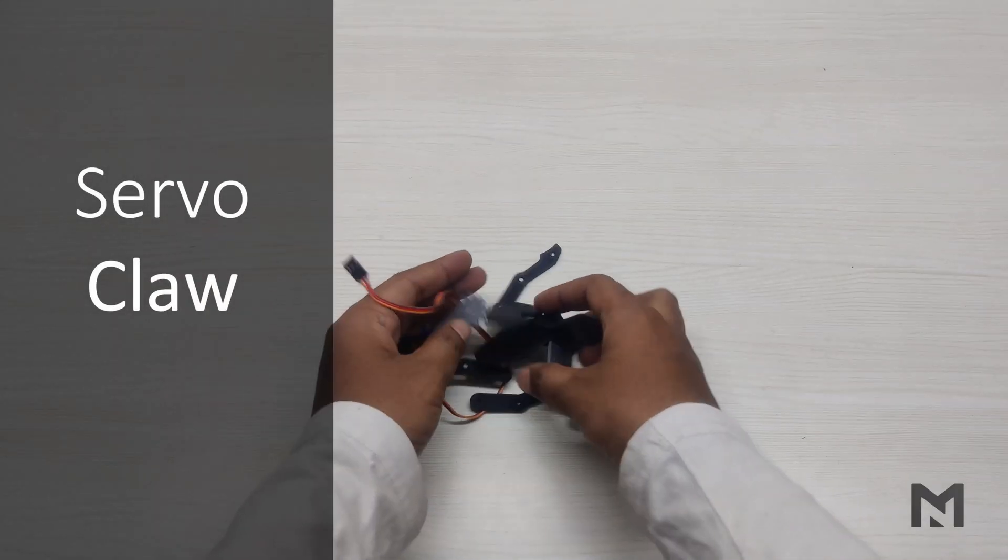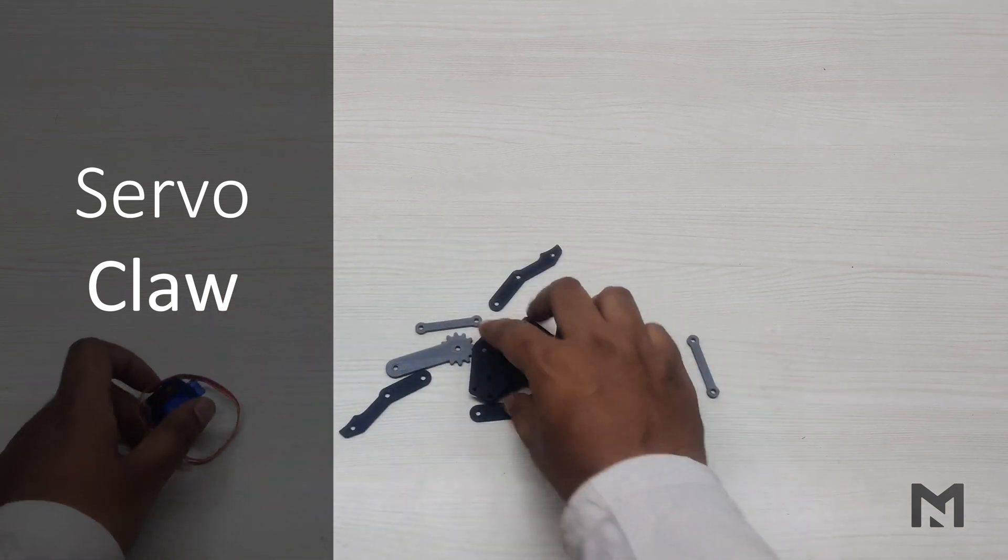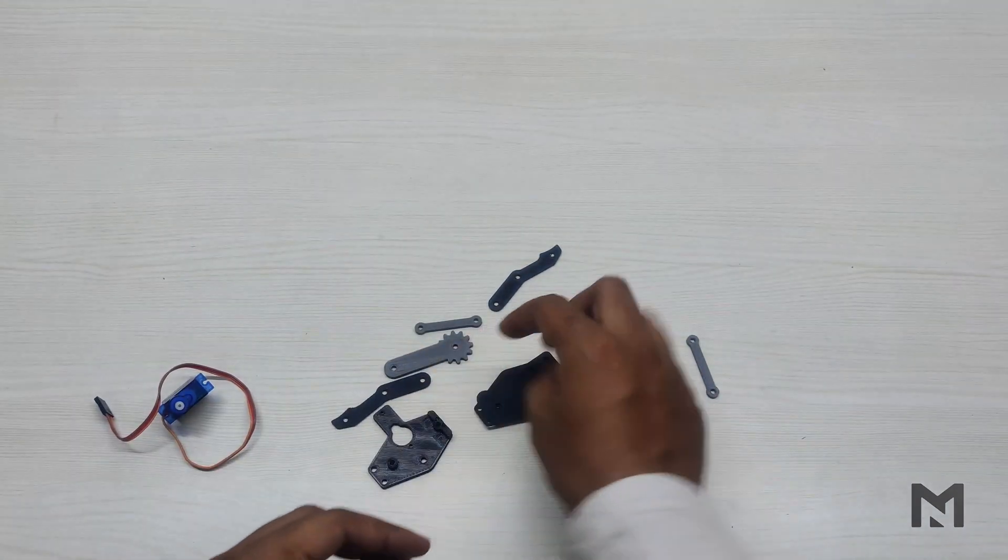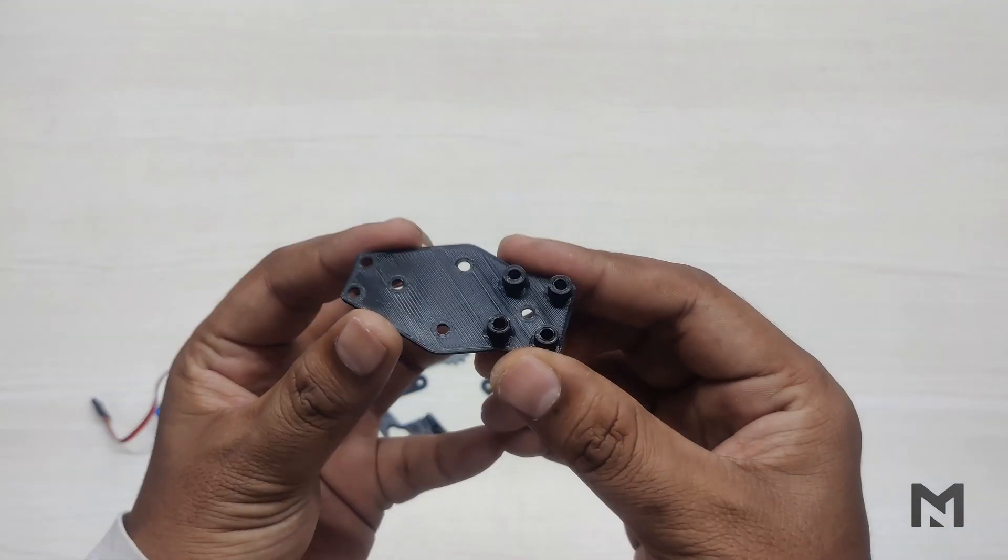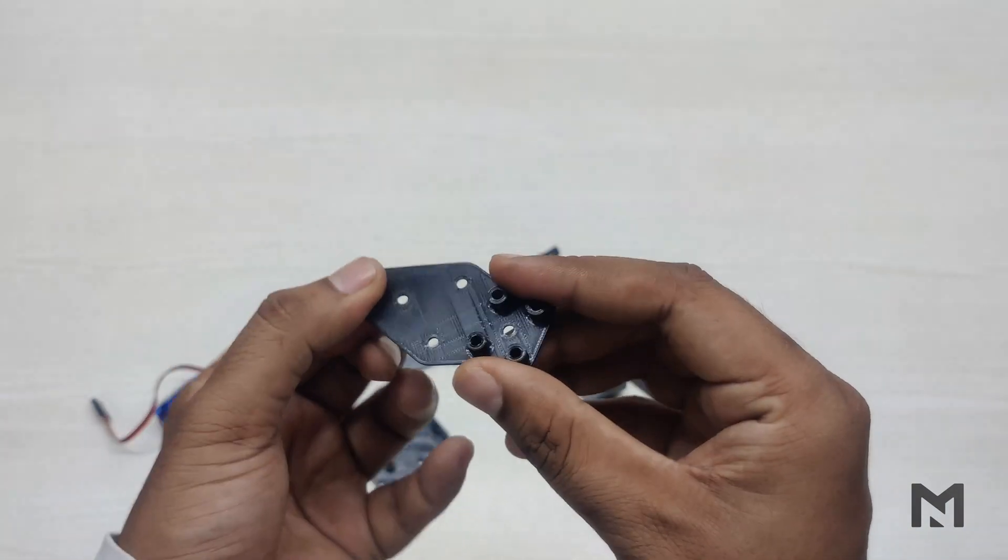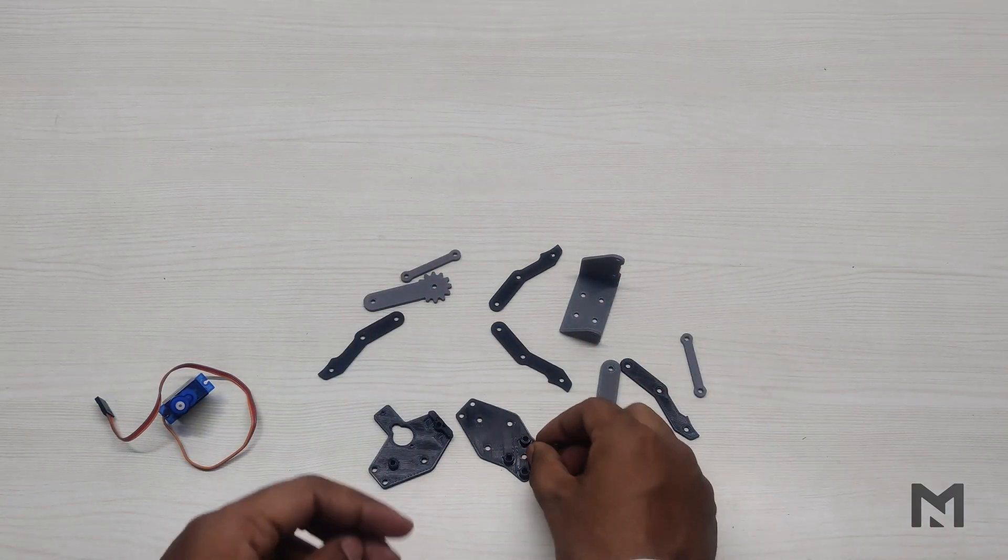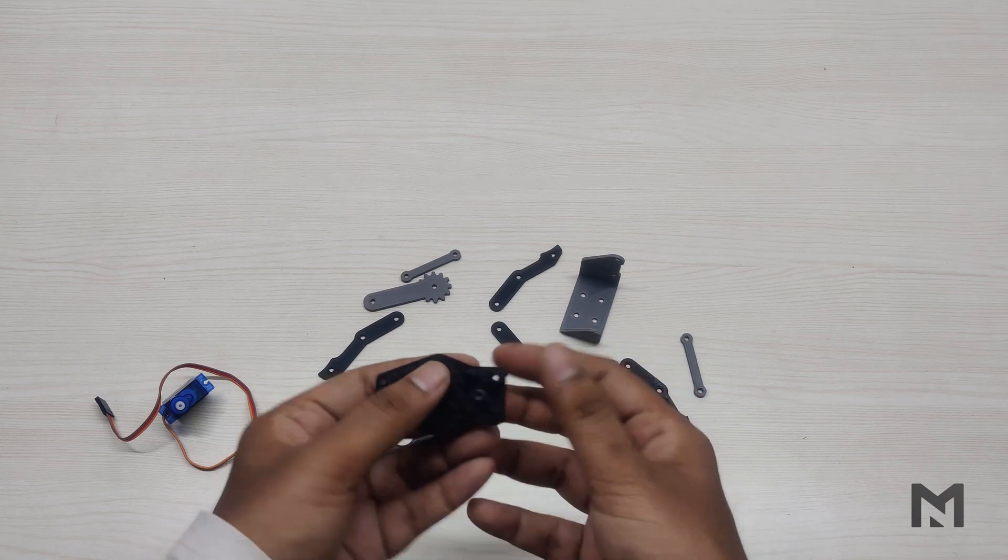The servo claw is made from various small parts which I have 3D printed in black and grey. You can choose the color of the filament according to your design. I have 3D printed these parts from PLA but you can also opt for ABS material. First we will insert the M3 screw of 15mm length into the bottom part as shown.